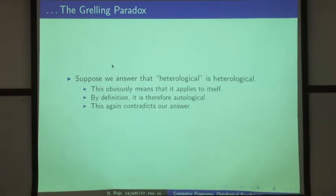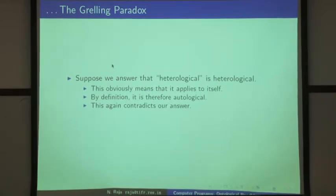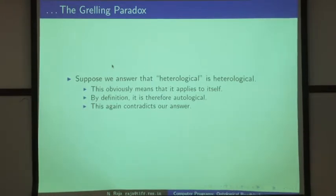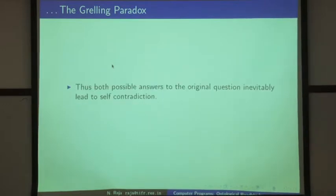What about the other possibility? Suppose we say heterological is heterological. So it applies to itself — we are claiming that heterological is heterological, meaning it applies to itself. But by this, you know that it is therefore autological, because here is an adjective that applies to itself, so it should be autological. So once again you get a contradiction. Both these answers lead to self-contradiction.